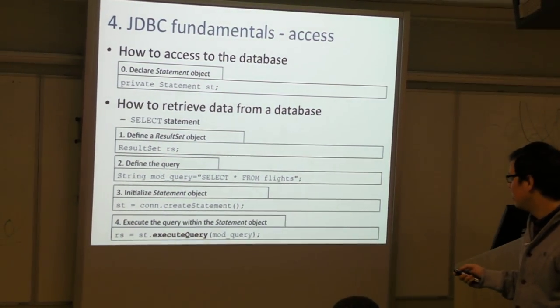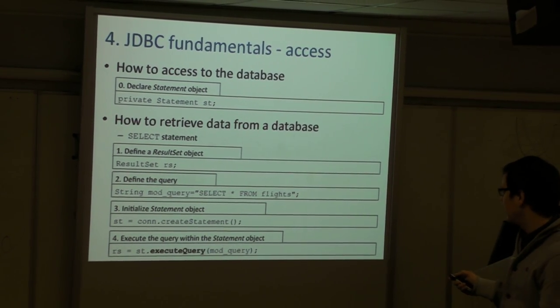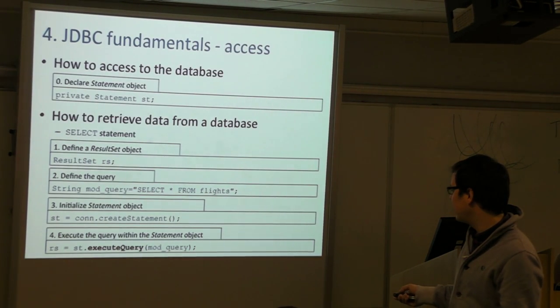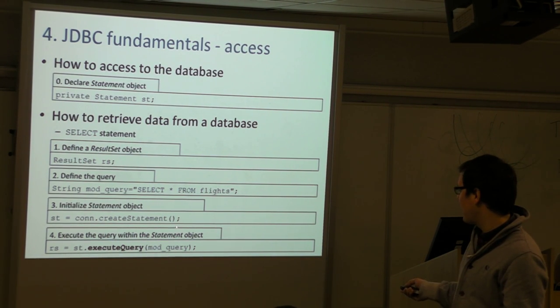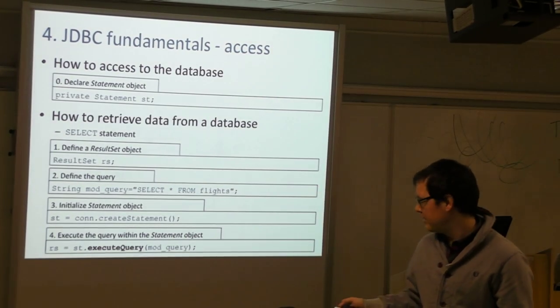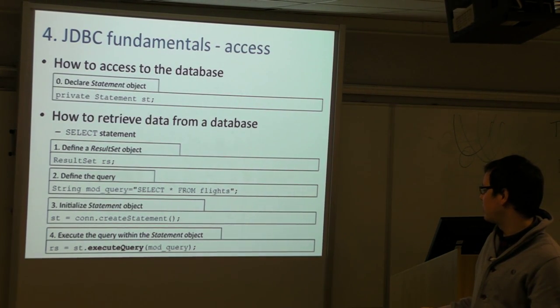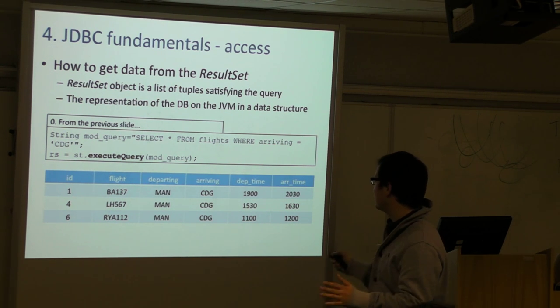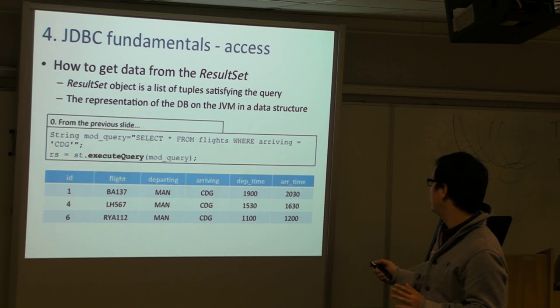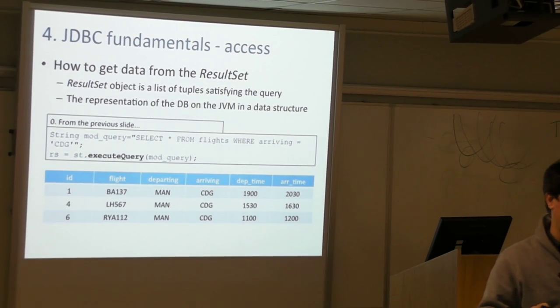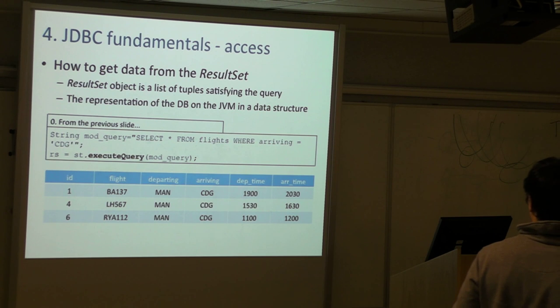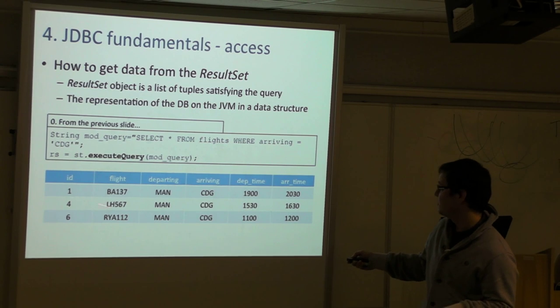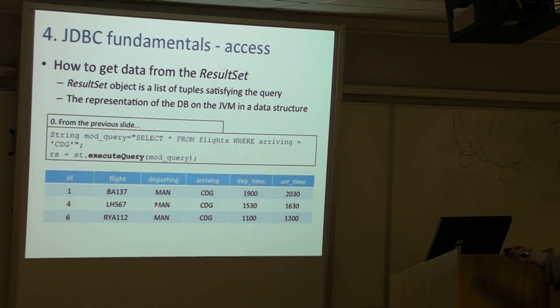The difference is that when you want to get data, you get it in a Java data structure. This data structure is called ResultSet. The ResultSet object is a list of tuples that satisfy your query. It's a view of the database on your Java virtual machine, and it looks like the table but just those rows that satisfy the query.